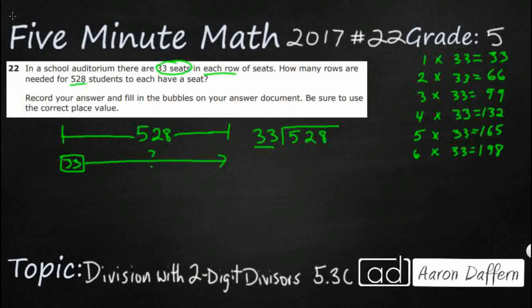33 does not go into 5, but 33 does go into 52. And as you can see, it's only going to go once. Because 1 times 33 is going to make 33. 2 times 33 is 66. That's bigger than 52. We're ignoring that 8 right now. So, that's going to make 33.